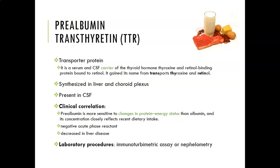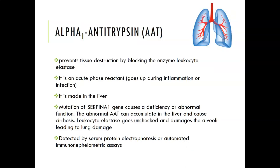It is a negative acute phase reactant, meaning that when you have acute inflammation and infection this protein will go down. It is also decreased in liver disease because production of proteins is impaired. The lab procedures to measure prealbumin are usually immunoturbinometric assays or nephelometry.